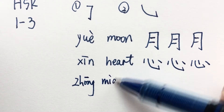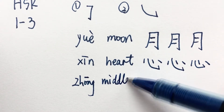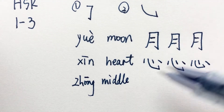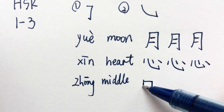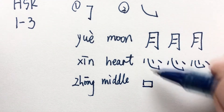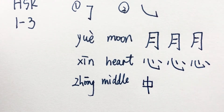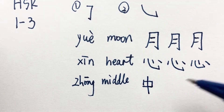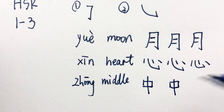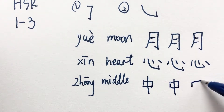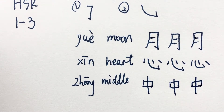The third word is 中, which means middle. If you say 中国, that would be China. So: 竖 vertical line, 横折 horizontal line and turn, then another 横 to close it like a square, and then one line to cross everything. This is 中.